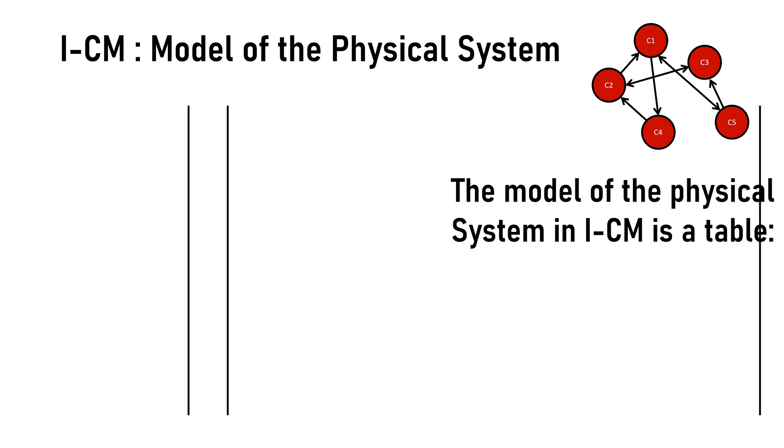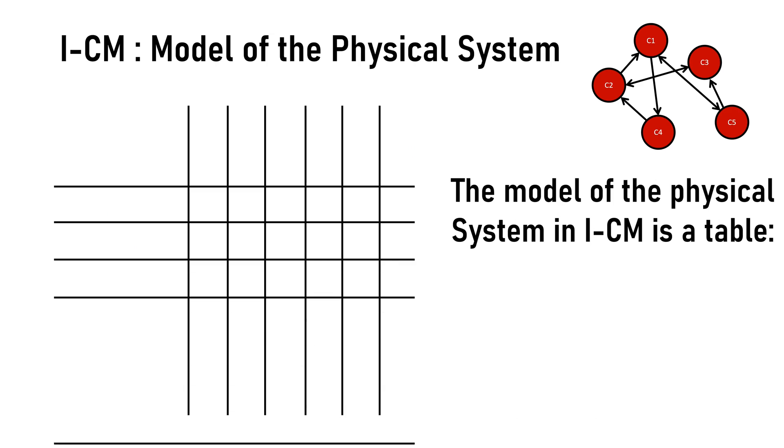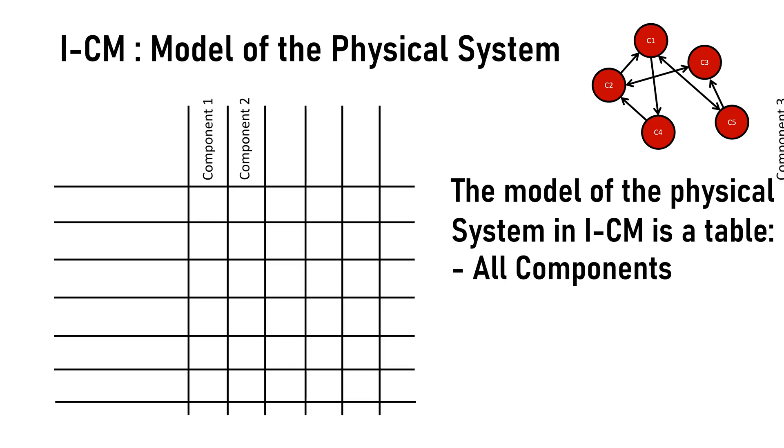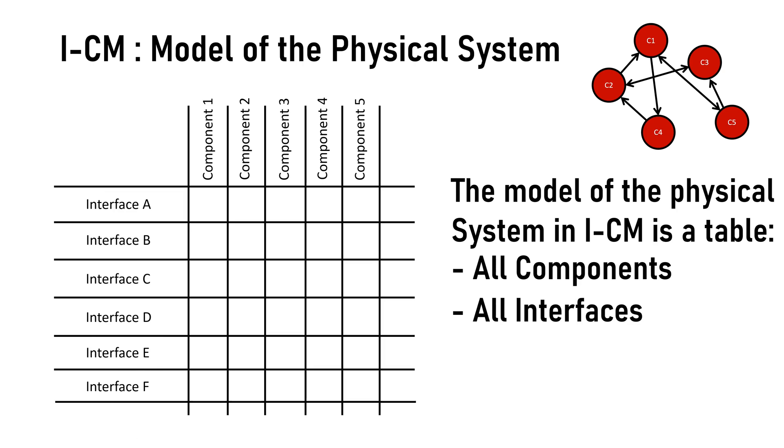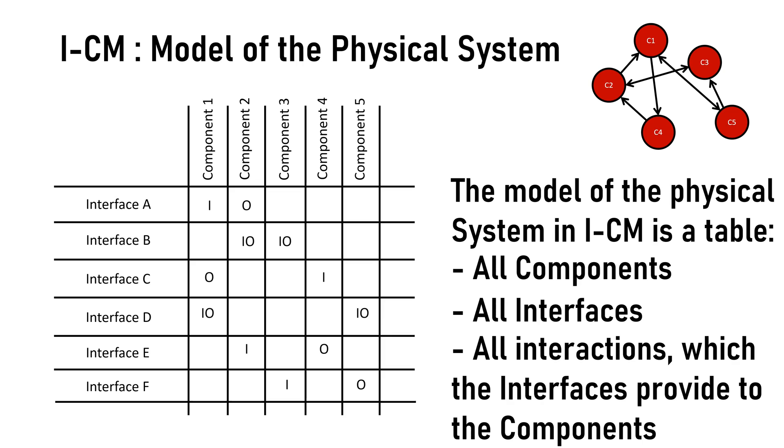Let's start with the model of the physical system. In ICM this is a table which includes the components entered in the columns of the table and the interfaces in the rows of the table. Inside the table we set all interactions which each interface provides to the respective components. We use I for input, O for output, IO for bidirectional interactions. This indicates a flow of information, energy or material.